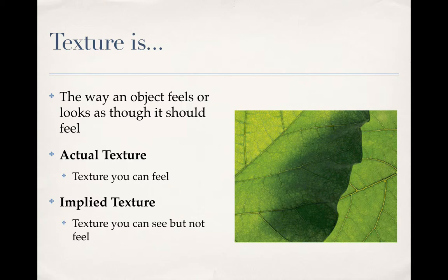In this example here, you're looking at a close-up photograph of leaves and you can see the veins in the leaf. You can imagine rubbing your fingers over a real leaf and feeling those, but this is a photograph, so it ends up not having any physical texture — so it's implied.